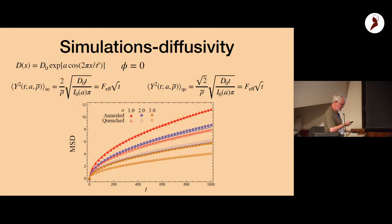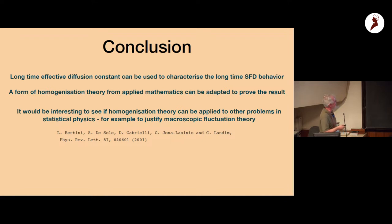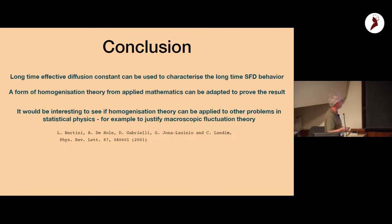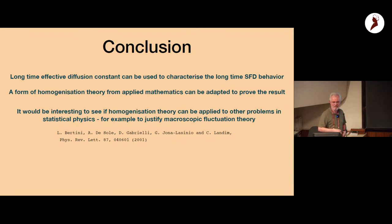The conclusion is: the long-time effective diffusion constant can be used to characterize long-time single file diffusion behavior. A form of homogenization theory from applied mathematics can be adapted to prove the result. The best research is when you learn something while doing it, and it would be interesting to see if homogenization theory can be applied to other problems in statistical physics, for example to justify macroscopic fluctuation theory.